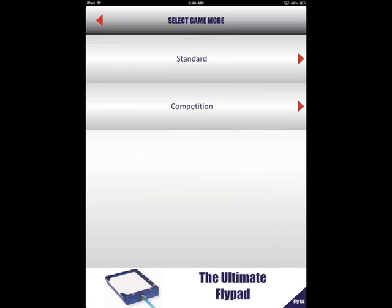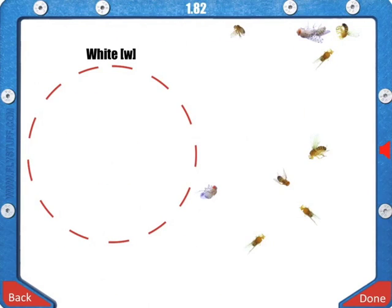Selecting competition mode will also allow the user to post their sorts to flystuff.com/appstats to compare against other app users. For this particular sort, your goal is to sort all white-eyed flies into the red circle.